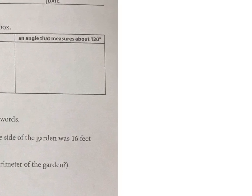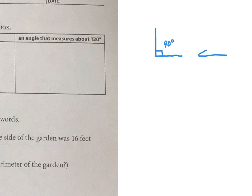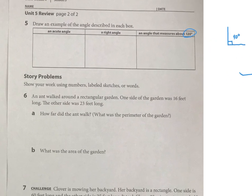This one is an angle that measures about 120 degrees. We know that a right angle is exactly 90 degrees. So what would 30 degrees be? 30 degrees would be about a third of that, so 30 degrees would look about like that. Since it's saying 120 degrees, you'd add those together. Draw an obtuse angle — something along that direction would be about 120 degrees. It doesn't have to be perfect, just estimate.